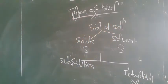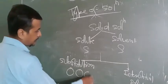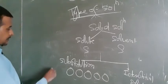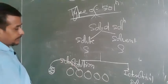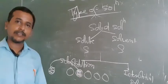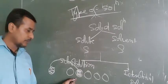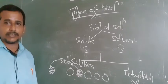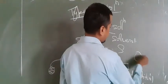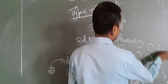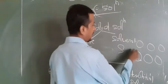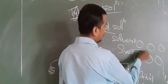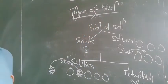In a substitutional solid solution, one solid component is replaced by another solid substance — that is known as substitutional solid. In an interstitial solid solution, the solid is made up of a single component, but in the spaces between atoms, one more component is inserted. That is known as interstitial solid.